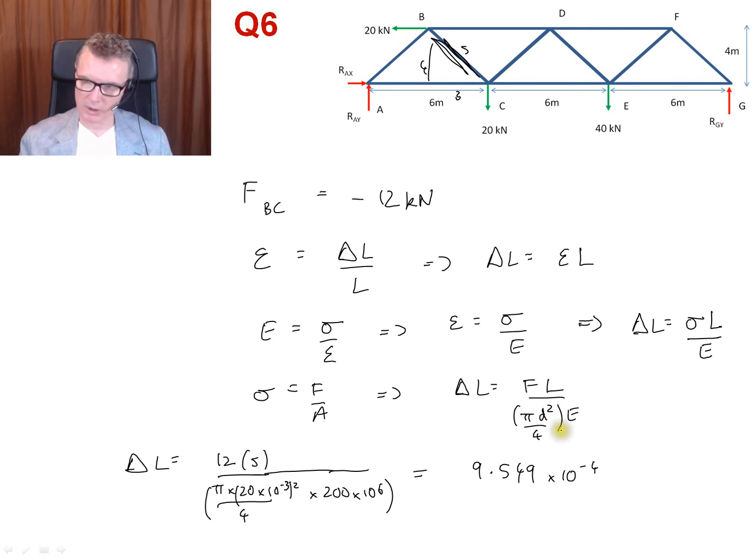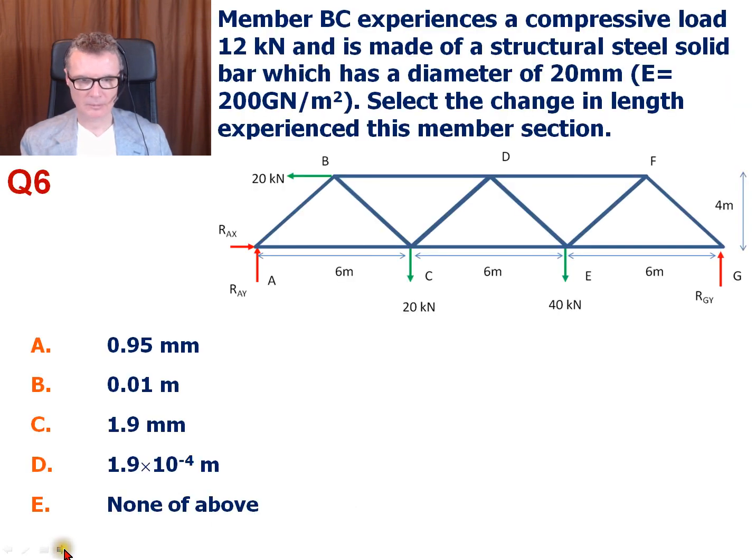That would be in meters. The other one to look out for is 0.955, which is 10 to the minus 3, so that's in millimeters. So I'm looking out for one of these numbers. What have I got?